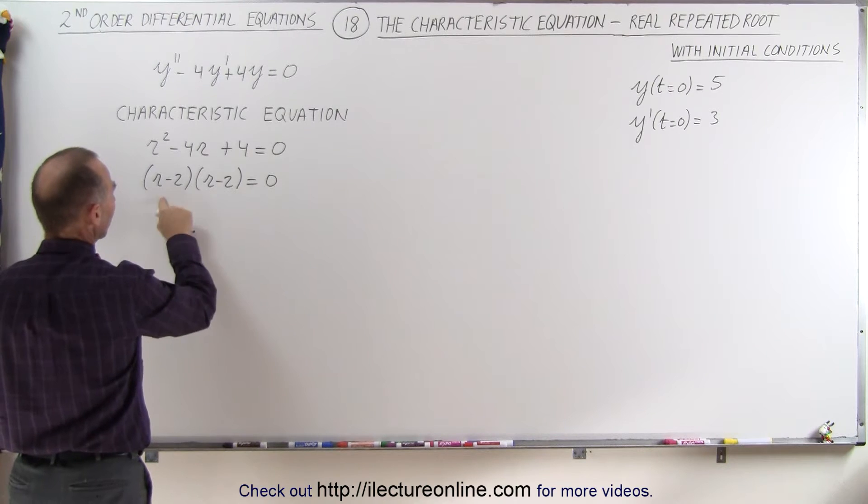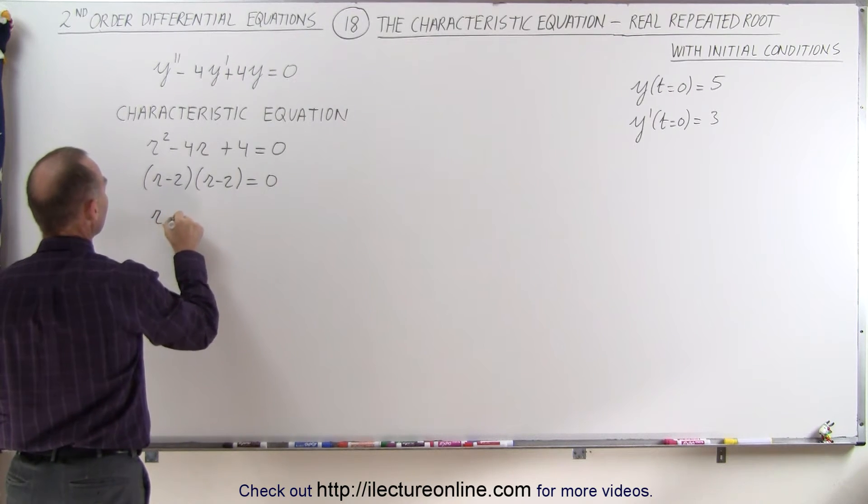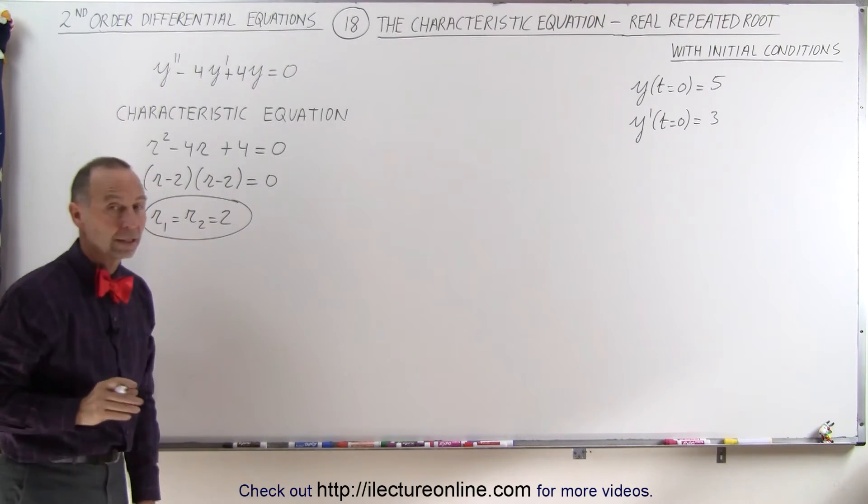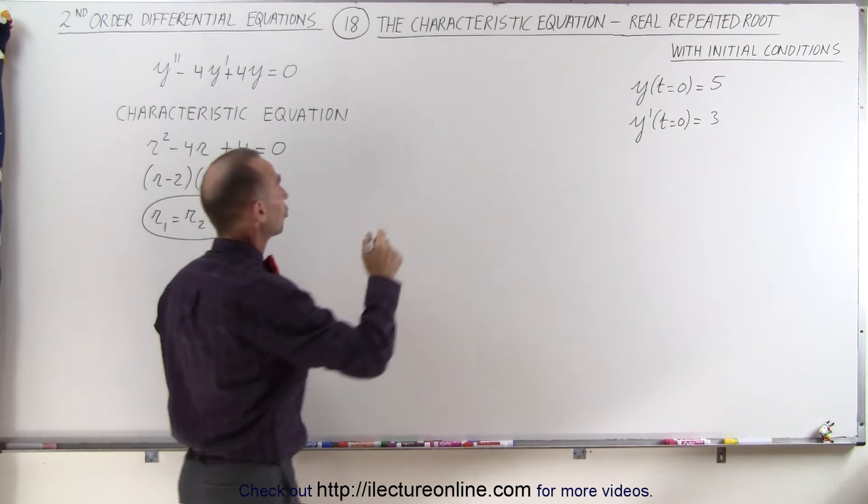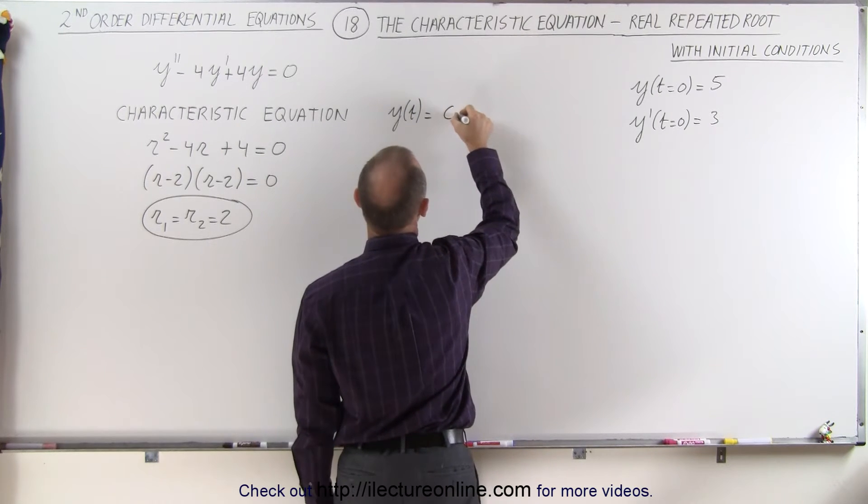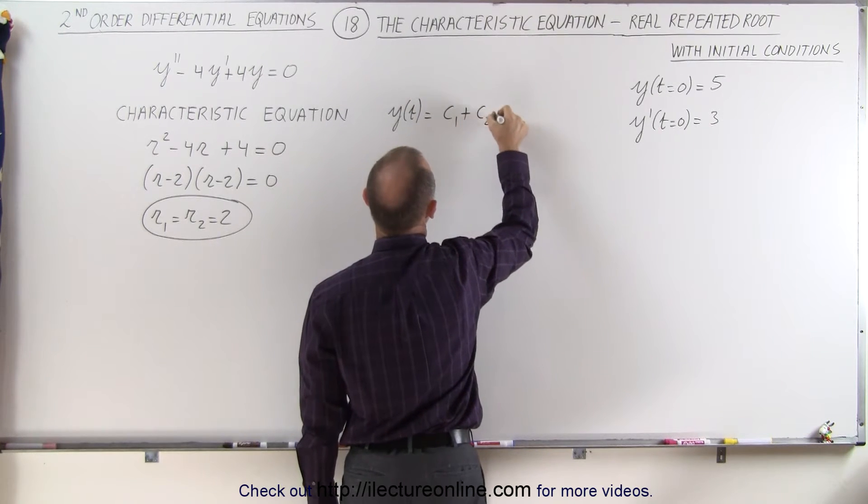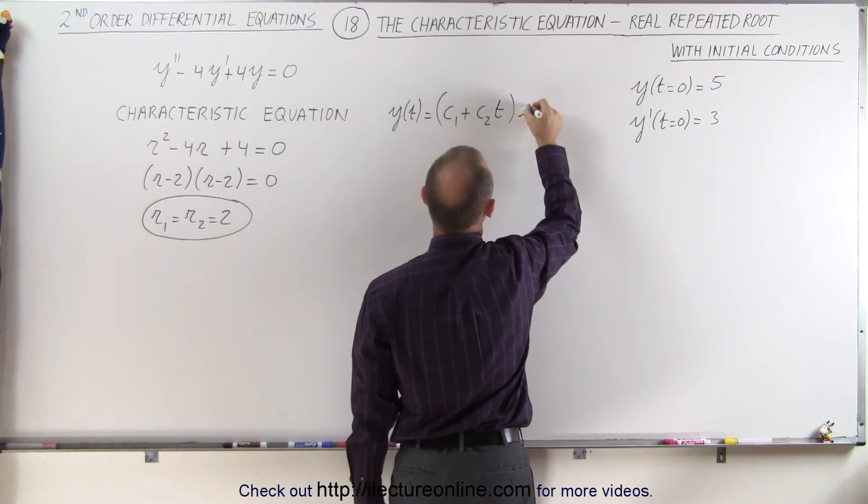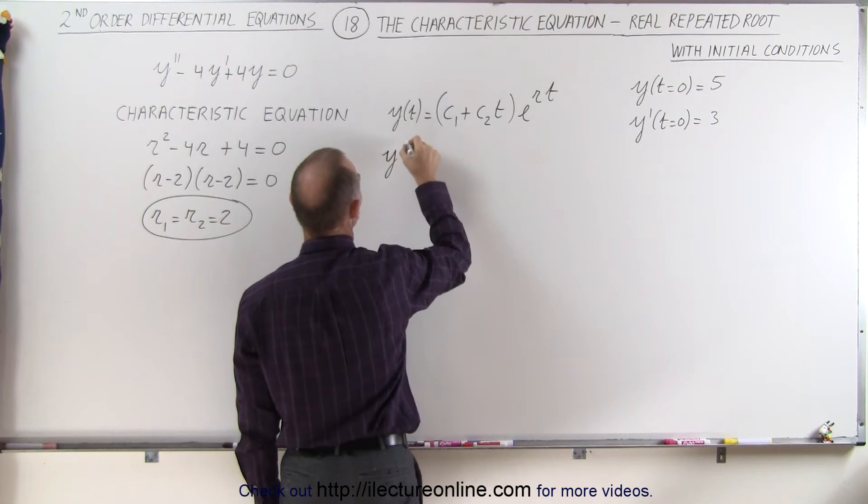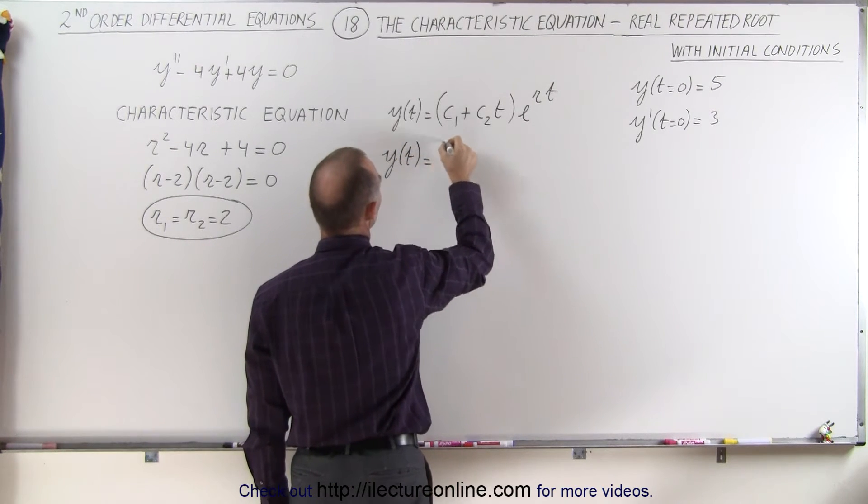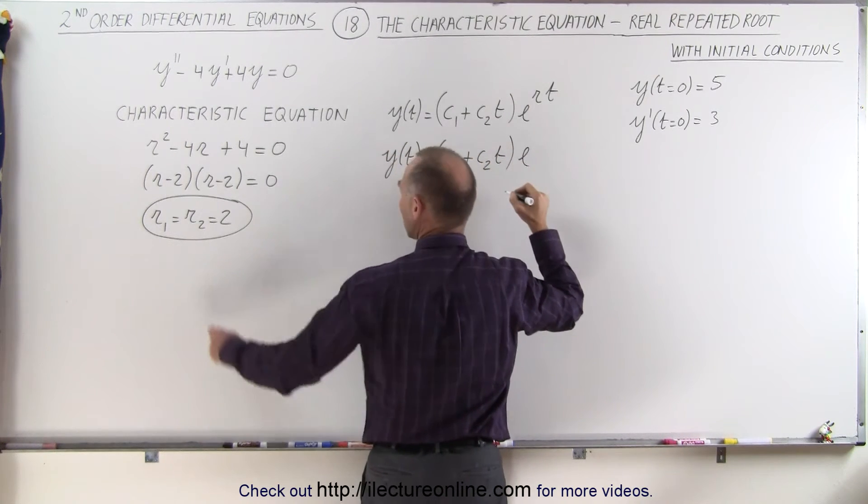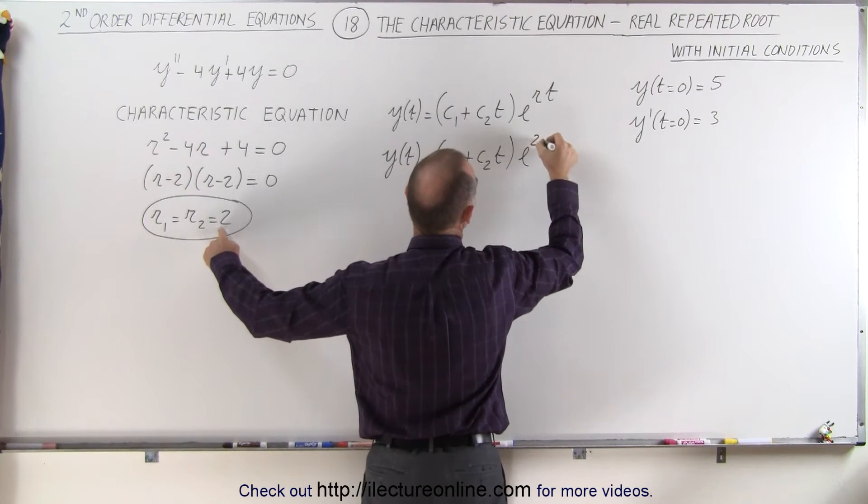But notice the two roots are the same. That means that r1 equals r2 equals 2. It's the same repeated root. Now the general solution can be written as y as a function of time is equal to c1 plus c2 times t times e to the root times t. And this would be the repeated root. So in this case we would get y as a function of time is equal to c1 plus c2 times t times e to the root. And the root is 2, so that would be 2 times t.